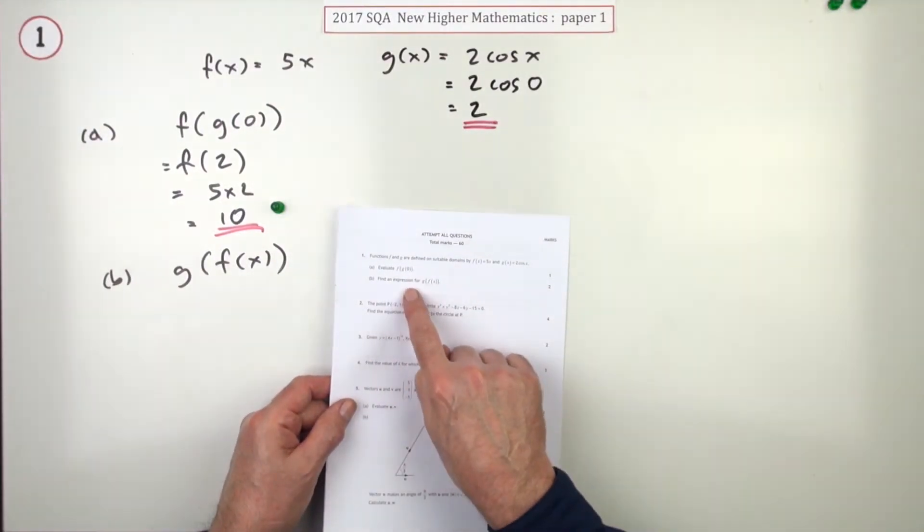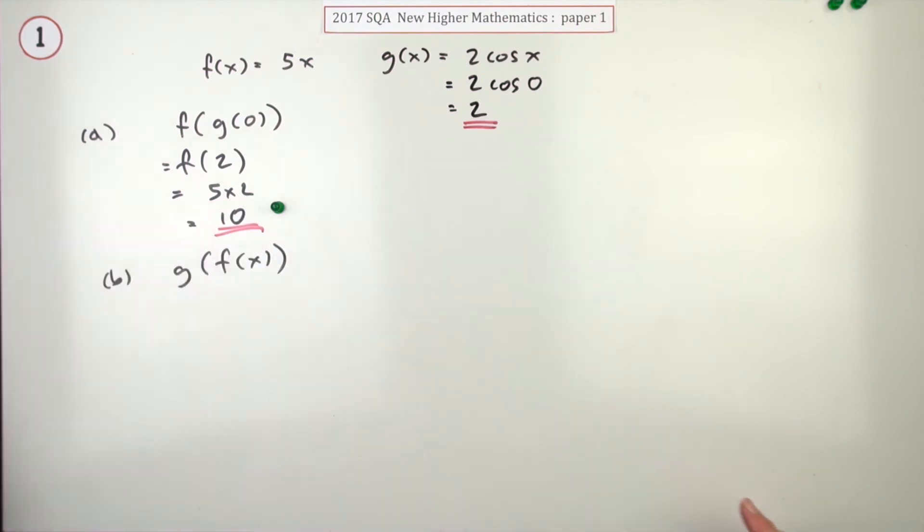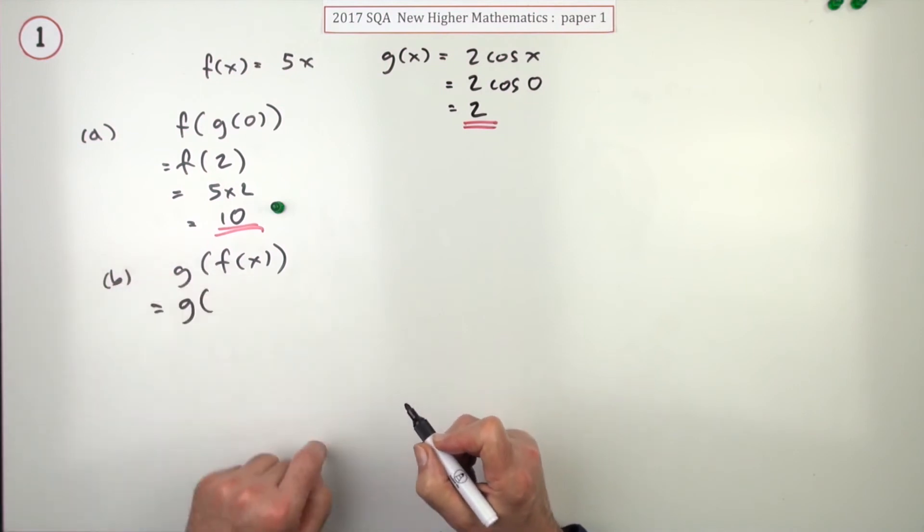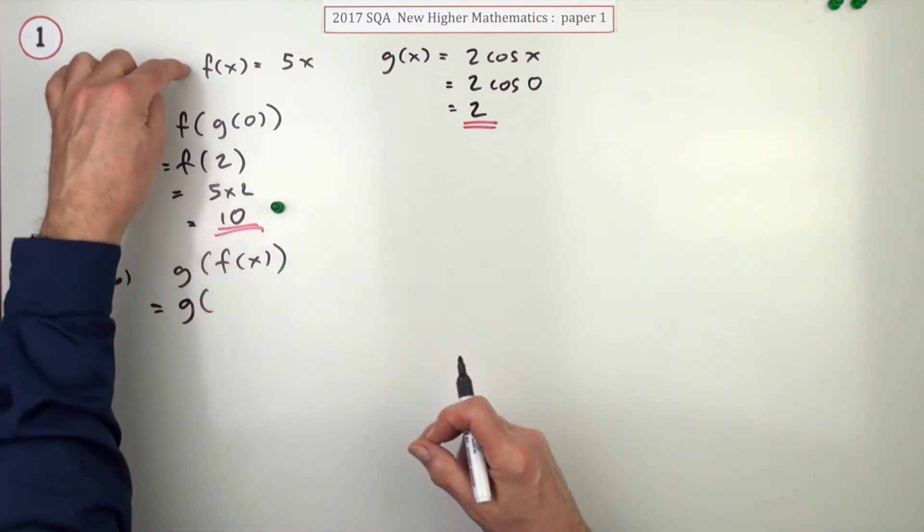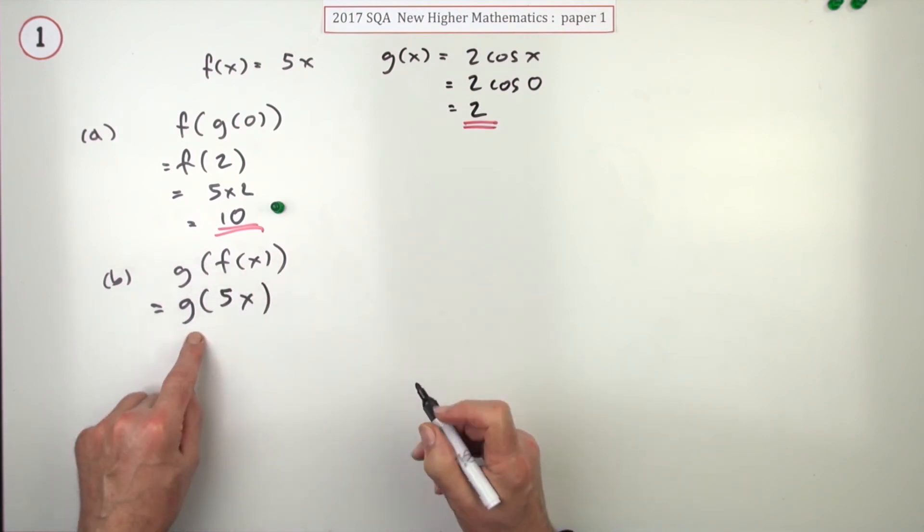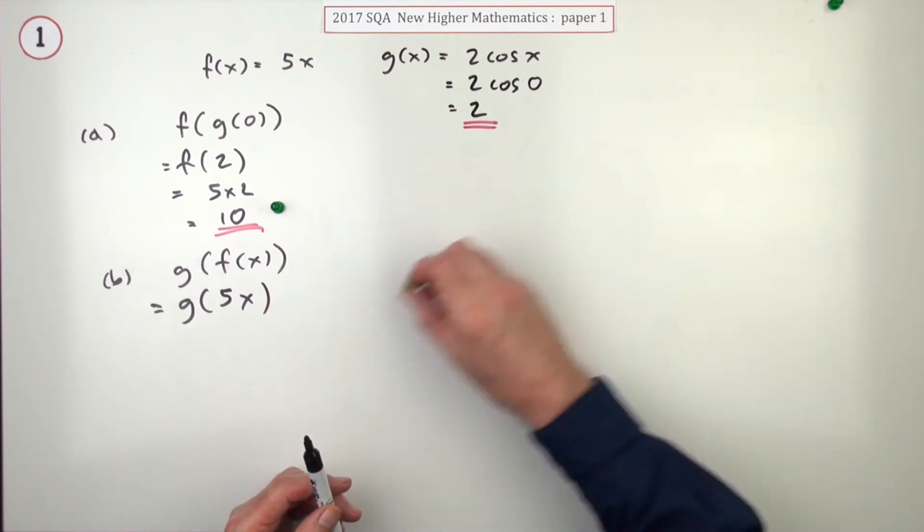And for part b, find an expression for two marks for g of f of x. Now there's two marks this time, as you would expect, because there's just two steps, much simpler steps than there was in the first part. First of all, what's g going to act on? What is this f of x you're going to put into it? Well, here it is: f of x is 5x. And simply doing that, interpreting what that means function of a function, gets you a mark.